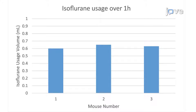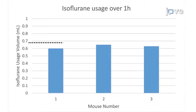This figure shows the amount of isoflurane used in milliliters for three different 6- to 7-week-old C57 Black 6 female mice over one hour of anesthesia maintenance using the digital low-flow anesthesia system. Due to the low flow rates, the low-flow syringe-driven digital vaporizer consumed less than one milliliter of isoflurane over the course of one hour.